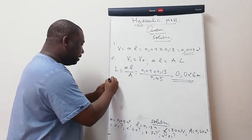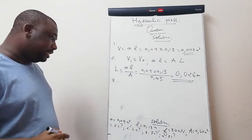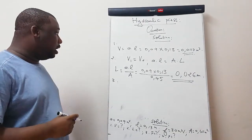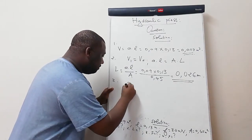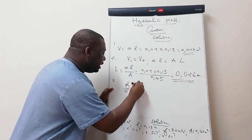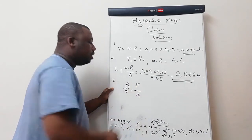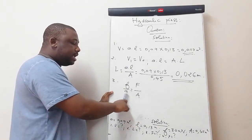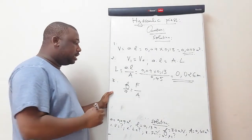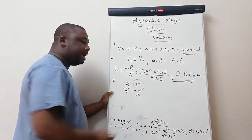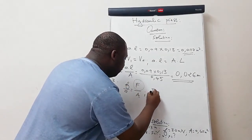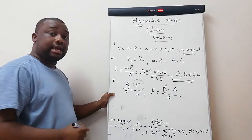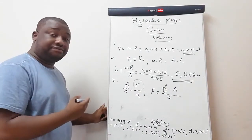Question three: find the force exerted by the ram (big F). Using the relationship f/a = F/A, we make big F the subject: F = (small f × big A) / small a. Since the area values are given directly, there's no need to use diameters.